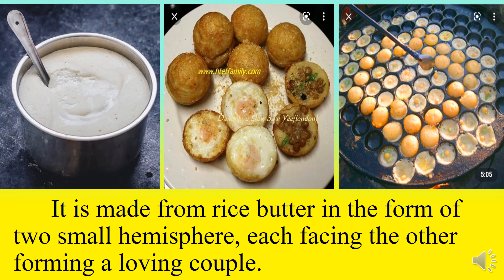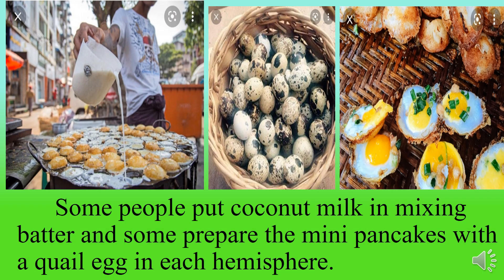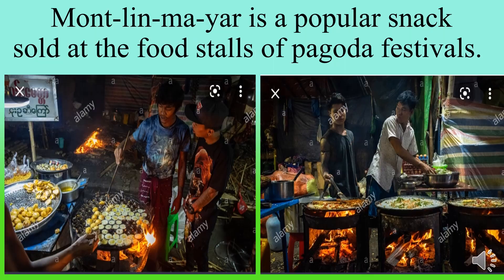Another snack is made from rice batter in the form of two small hemispheres facing each other like a loving couple. It is eaten with roasted sesame powder with salt and boiled green beans. Some people put coconut milk in the mixing batter, and some prepare the mini pancakes with a quick art in each hemisphere. It is a popular snack sold at food stores of Pagoda festivals.